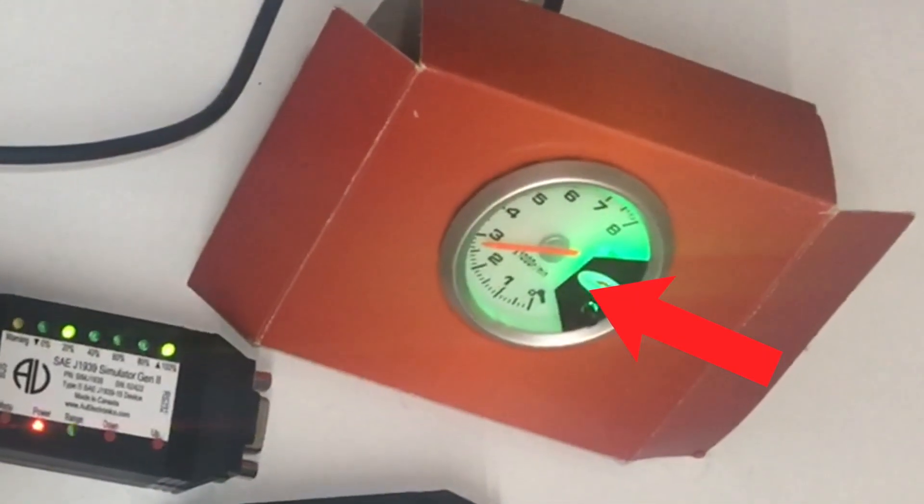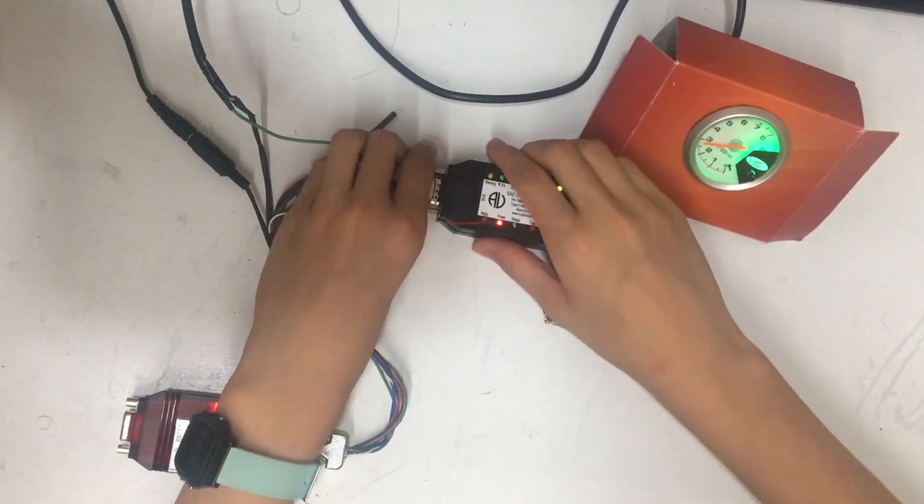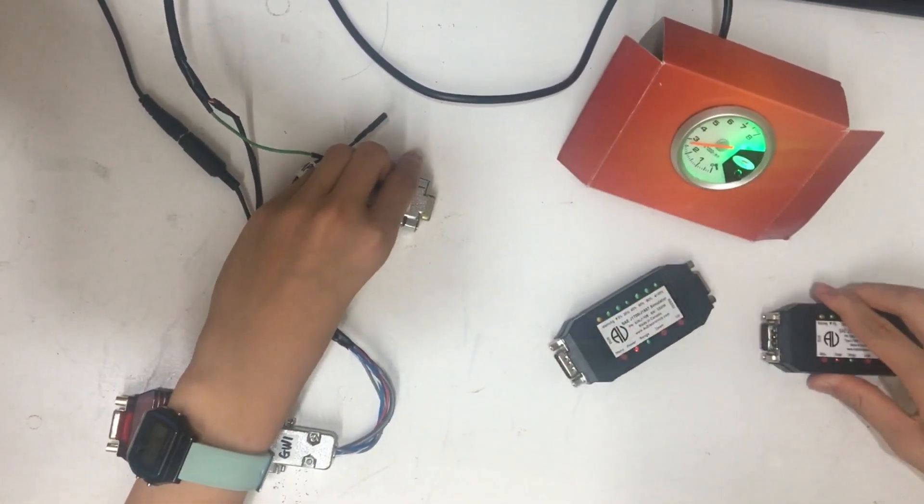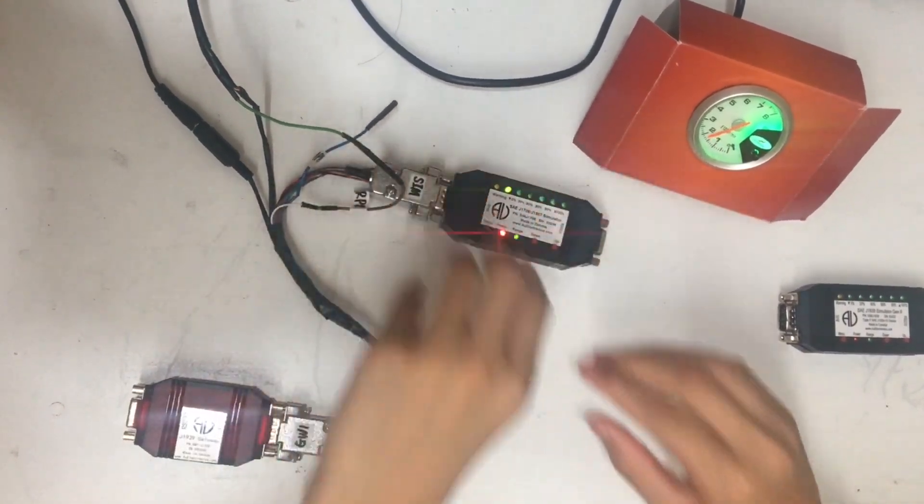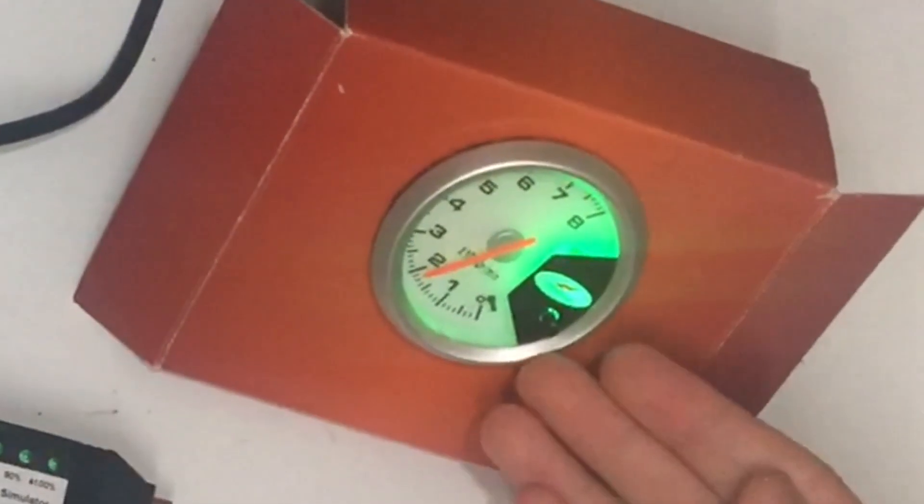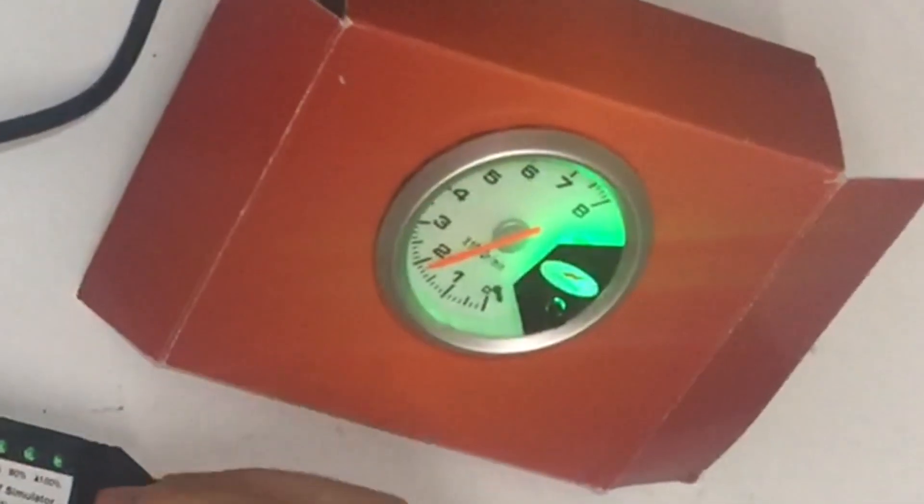The pointer has now moved to around 3000 rpm. Now, let's switch to a J1708 simulator. Because each simulator is set at a different value, the pointer is now at around 2000 rpm.